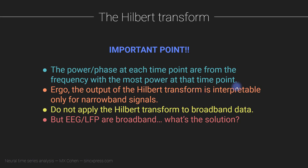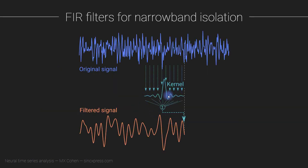Therefore the output of the Hilbert transform is interpretable only for narrowband signals, so you shouldn't apply the Hilbert transform to broadband data. But of course EEG and LFP are broadband phenomena — they have energy at a whole range of frequencies. So what is the solution? We have to filter the data first. We apply a filter to the data that gets us from our original broadband signal to a narrowband filtered signal, and then you can apply the Hilbert transform to this narrowband filtered signal. You already know that wavelet convolution is narrowband filtering with a Gaussian. What I'm going to talk about now is FIR, or finite impulse response, filtering.